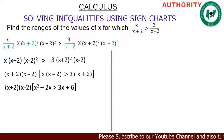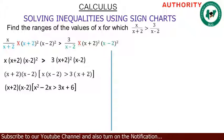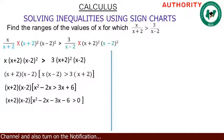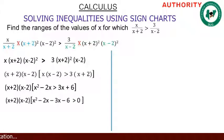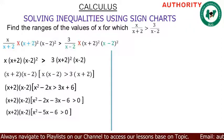Now we move everything from the right-hand side to the left. 3x becomes -3x and 6 becomes -6. So we get (x+2)(x-2) times [x²-2x-3x-6] > 0, which simplifies to (x+2)(x-2)(x²-5x-6) > 0.